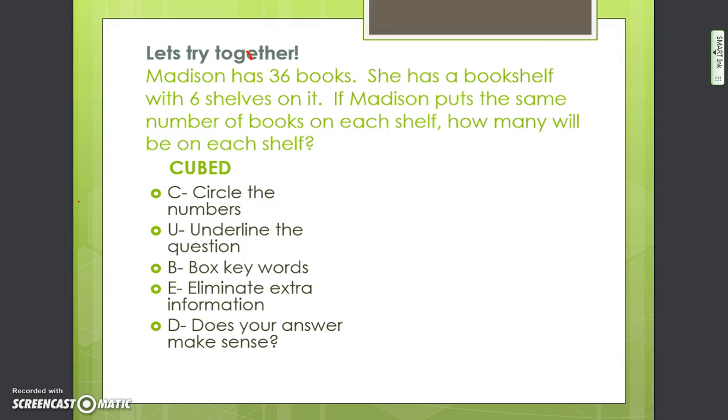Let's do this next one together again. Madison has 36 books. She has a bookshelf with 6 shelves on it. If Madison puts the same number of books on each shelf, how many will be on each shelf? Again, let's underline our question. We circled our numbers. It's also important to note that it's the same number of books on each shelf.